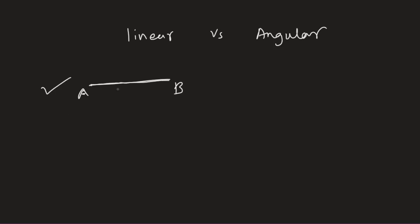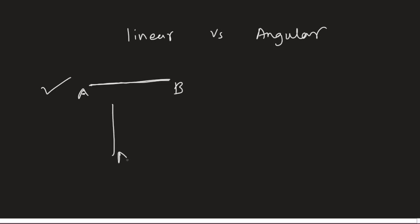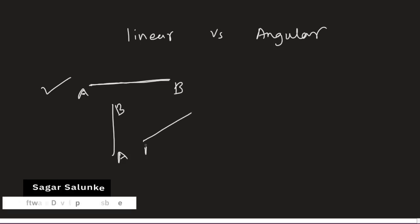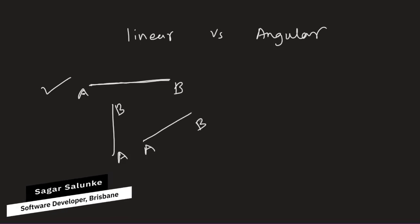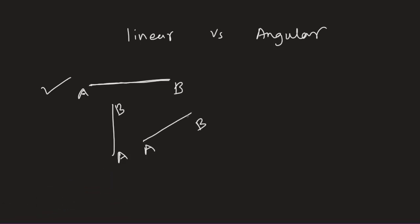It can be like this way. A goes to B. It can be like this one as well. So notice that we are moving in a linear direction. That is what is called linear velocity.